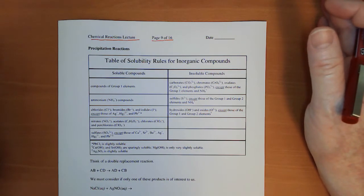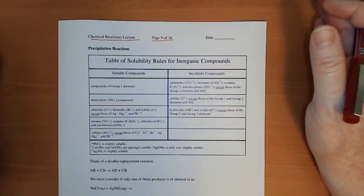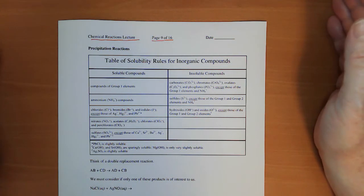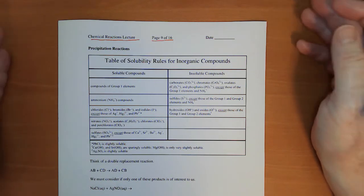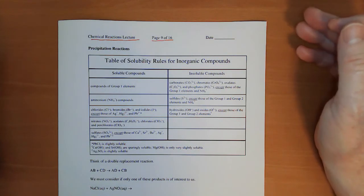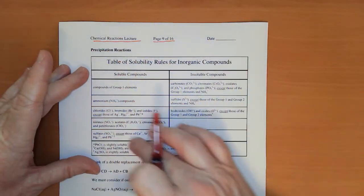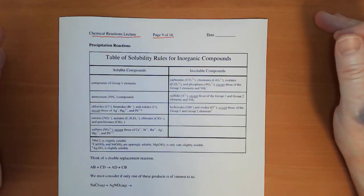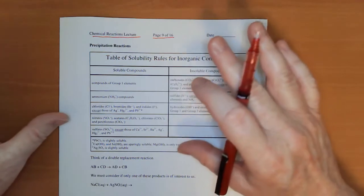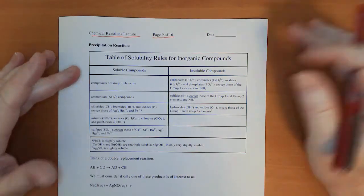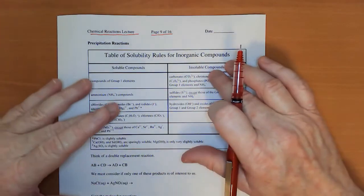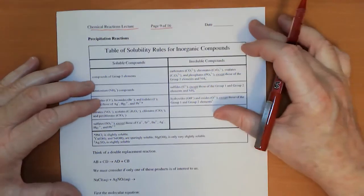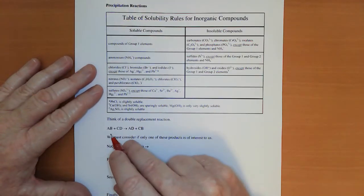For precipitation I want you to think of it as a double replacement reaction, and when you look at the products you need to know some solubility rules. Don't panic that you have to memorize this entire table. If you know some of the rules you know the others by default. If you know who's soluble, by default you know who's insoluble and vice versa.